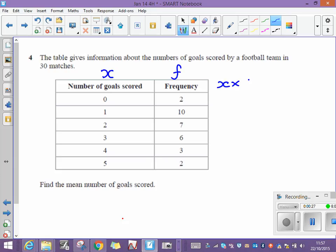And I'm going to do X times F. So all I need to do is just take each of these numbers. Zero times two is zero. One times ten is ten. Two times seven, fourteen. Three sixes are eighteen. Four times three is twelve. Five times two is ten.